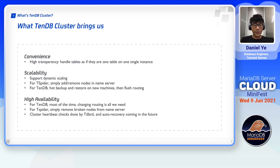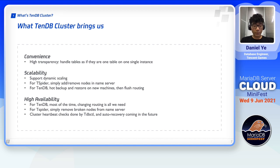As for high availability, it's also easy and simple for a TenDB cluster to recover from breaks. For TenDB, if your deployment is a master-slave pair, you only need to redirect the link from T-Spider to the healthy slave node in the cluster routing. In the case of group replication, broken nodes will be automatically kicked out. This is also the case for TDB control, since it's usually deployed with group replication. For T-Spider, simply cut access to broken nodes by removing them from the name server and the cluster routing. For now, a heartbeat detect mechanism is integrated into TDB control to find and report broken nodes. In our future releases, TDB control will be able to fix them and maintain cluster routing itself without needing extra tools.